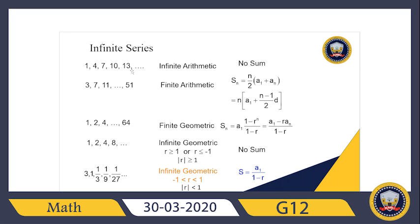We have two types of infinite series. For infinite arithmetic series — an infinite number of arithmetic terms — we cannot find a sum because the sum would be infinity. For infinite geometric sequences, we have two options: if the absolute value of r is bigger than one, we say there is no sum.